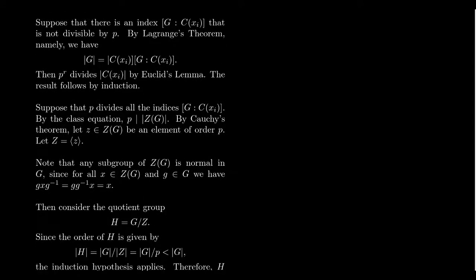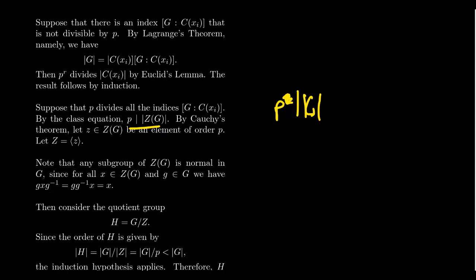The next case: what if P divides all of these indices? By assumption, P to the R divides the order of G. So in particular, P by itself — because R is at least one — P will divide the order of G. So P divides all the indices and it divides the order of G. So by the class equation, P is going to divide the order of the center. This is where Cauchy's theorem is going to come into play.